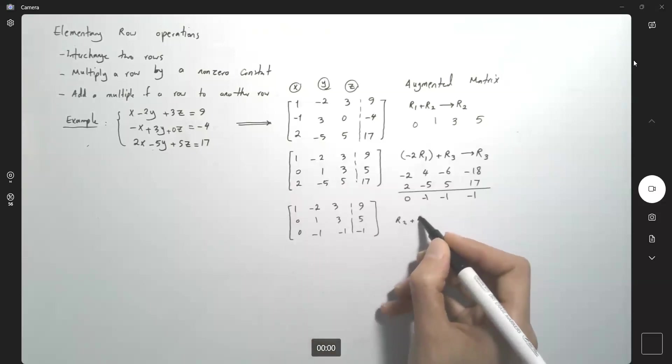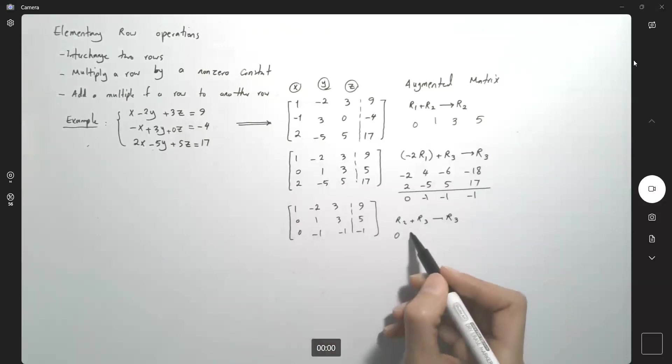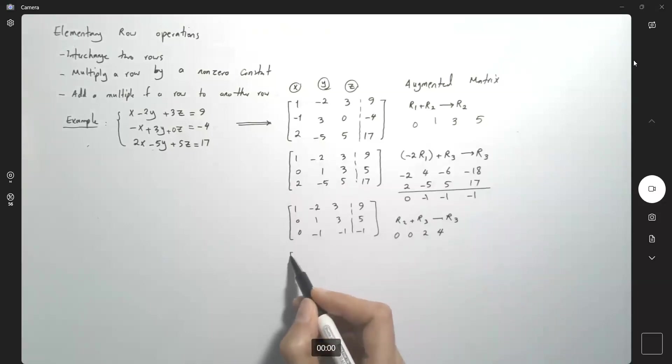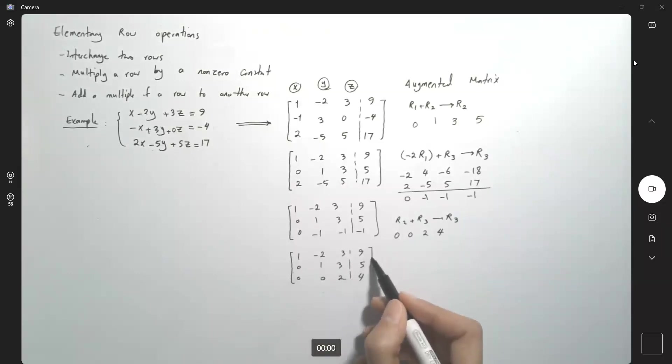So R2 plus R3 and replace R3. If I add these two together, 0 plus 0, 0 and then I have 0 and I have 2 and then I have a 4. So my new matrix becomes 1, negative 2, 3 and 9, 0, 1, 3, 5, 0, 0, 2 and 4.